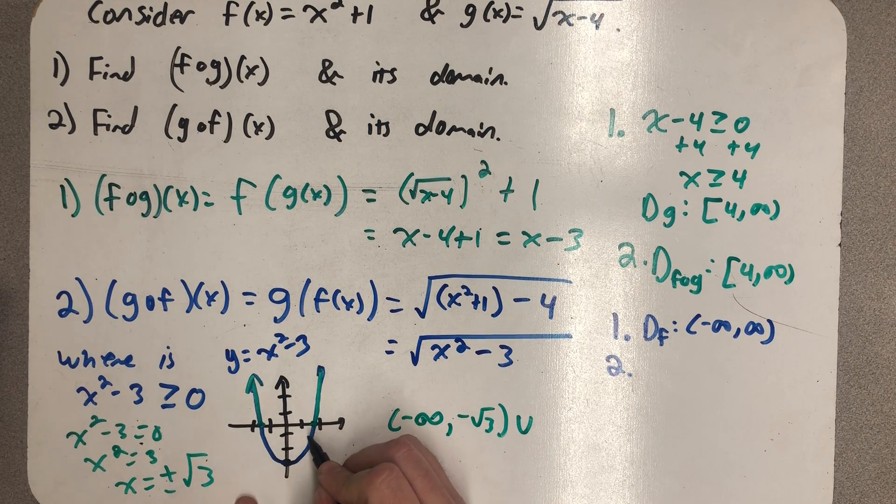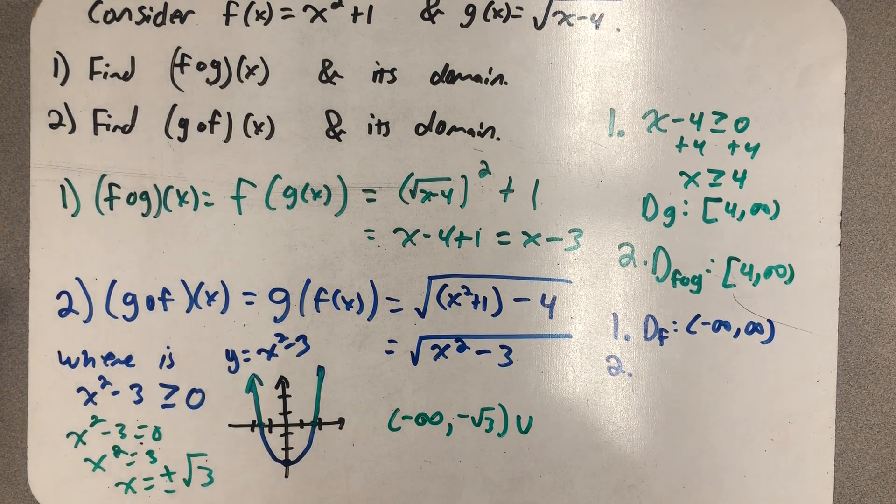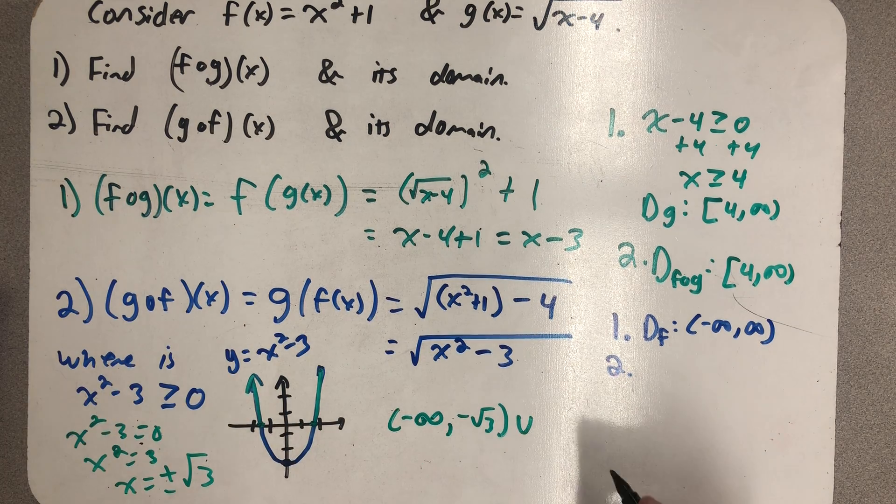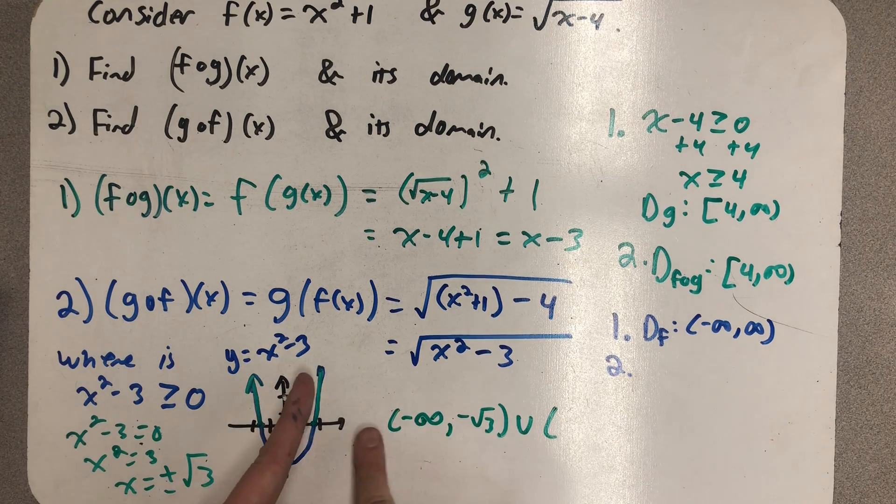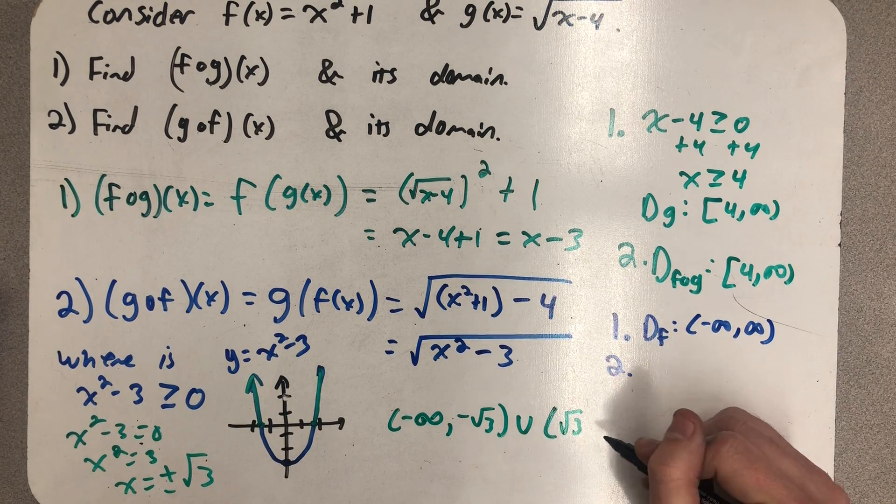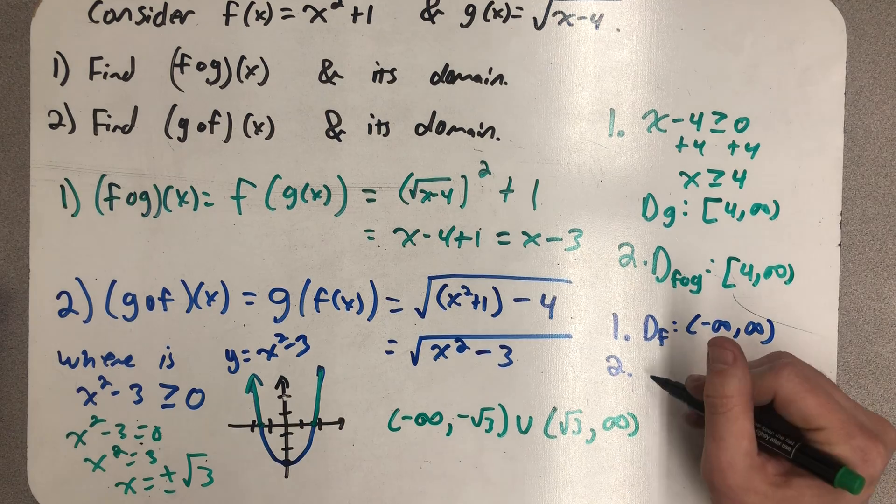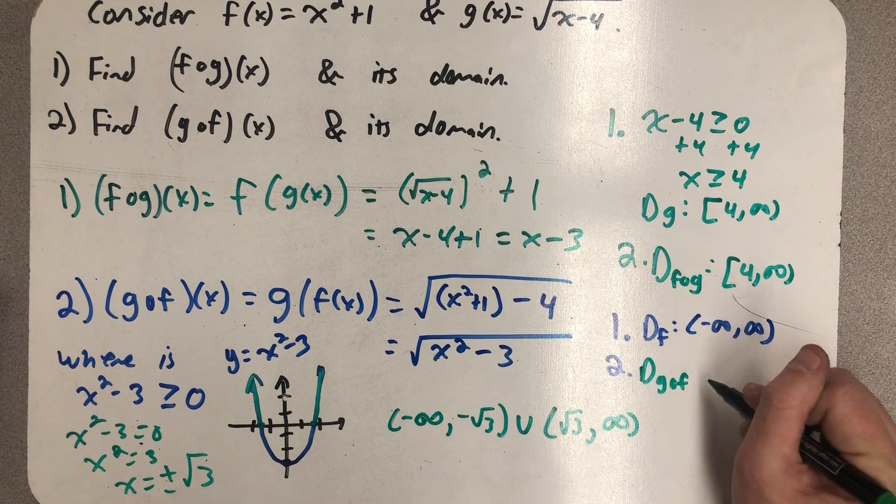These are bad values. That's where x squared minus 3 is less than 0. I can't evaluate the square root then, so I leave those out. And then over here I have from root 3 to infinity on the x-axis. And here's my domain of g composed with f.